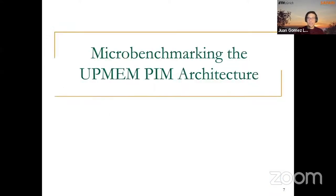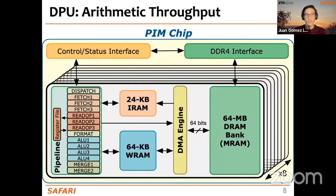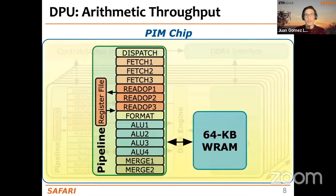Now we are going to start understanding even more about these DPUs and about this PIM architecture by doing some microbenchmarking. The idea of microbenchmarking is to use very simple programs that help us characterize the inherent characteristics of this architecture — measuring basic characteristics such as arithmetic throughput or bandwidth to the two main memory spaces used for data and operands.